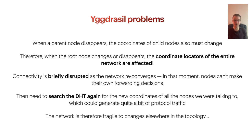In addition to that, we've also seen cases where unstable network links can result in storms of constant coordinate changes, which can render the network unusable for a period of time. The Yggdrasil project is exploring protocol changes to mitigate problems like this, but in the meantime we've also been trying to work on some mitigations ourselves.